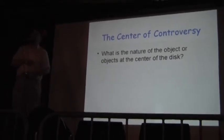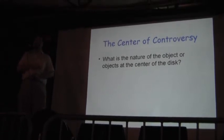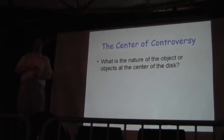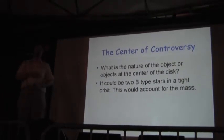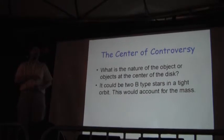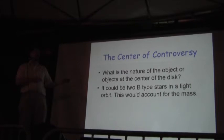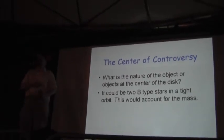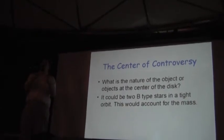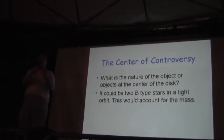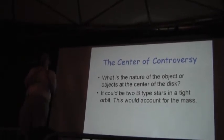Okay, so what's the center of controversy? Well, what's in the center of the disk? You can't see it directly. We've got to sort of piece it together through other observations. Could it be two B-type stars in close orbit? It would account for the mass, right? But what it wouldn't account for would be the variation of the size of the hole. You wouldn't normally think that the orbits of two B-stars in mutual orbit would vary that quickly. Even if there were a large amount of mass transfer between them.